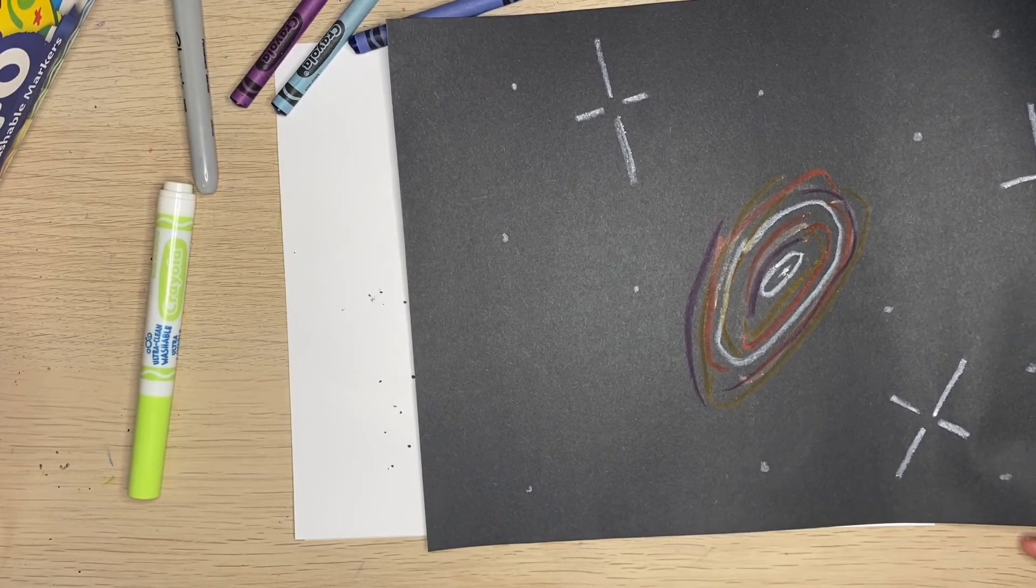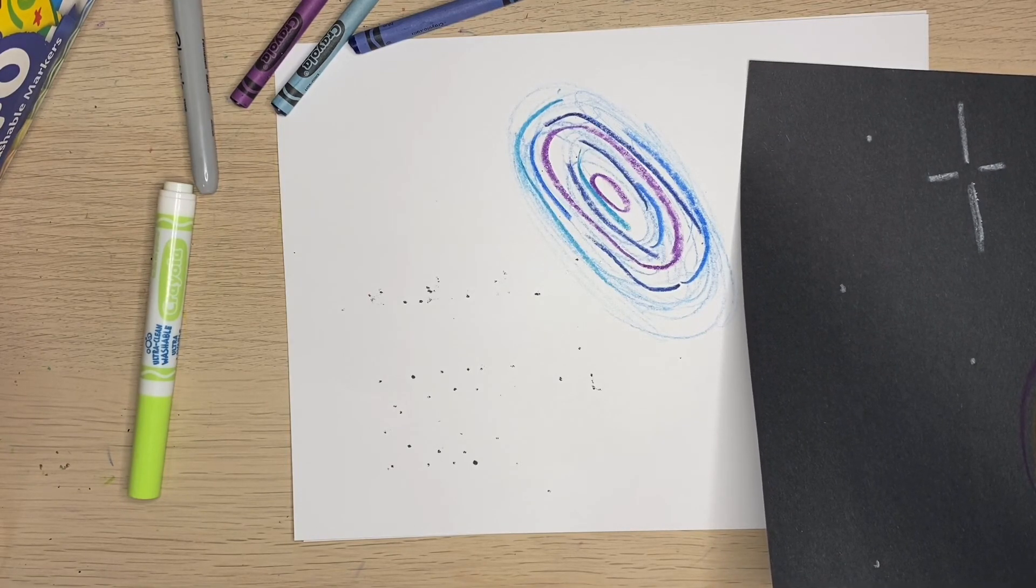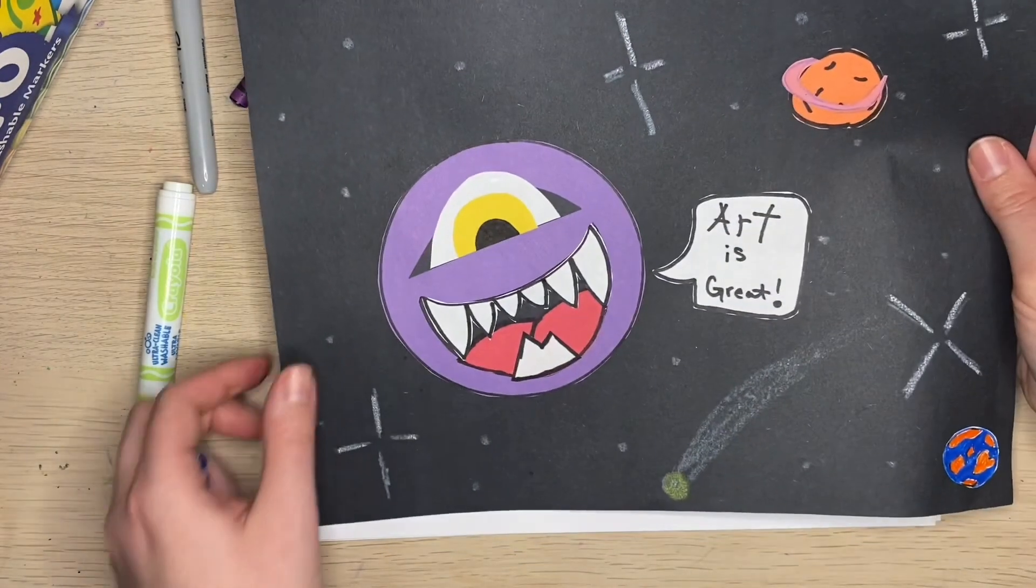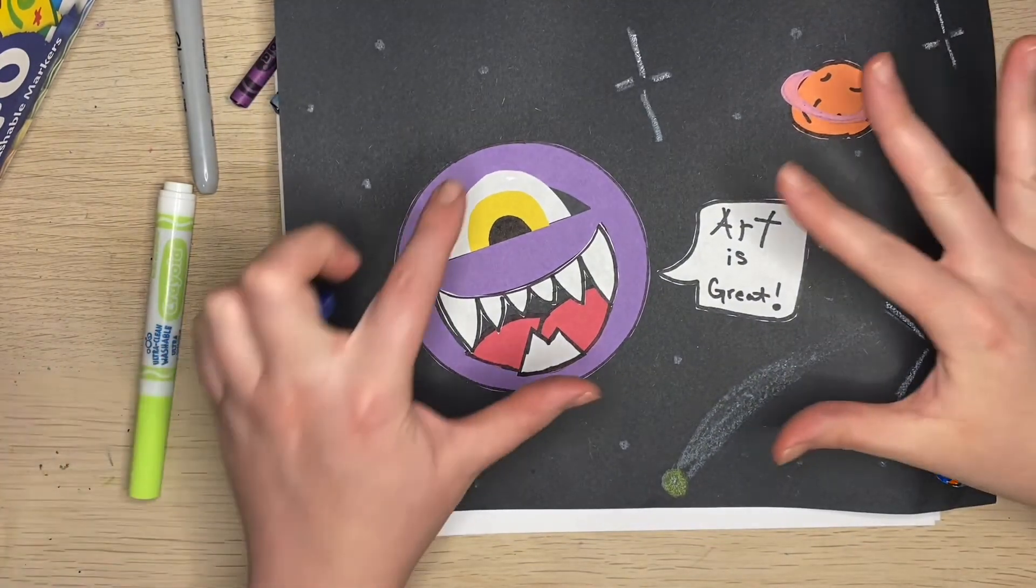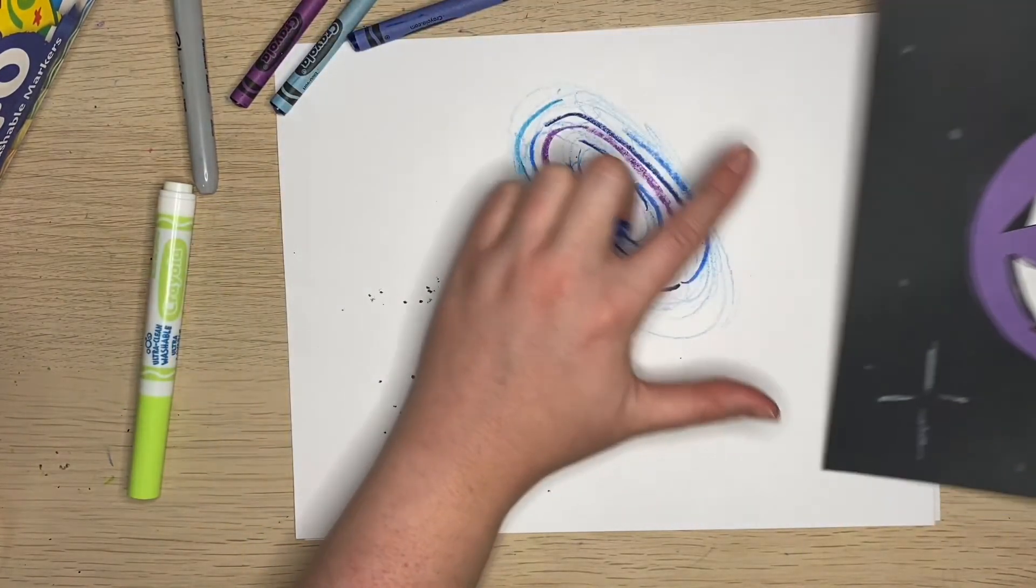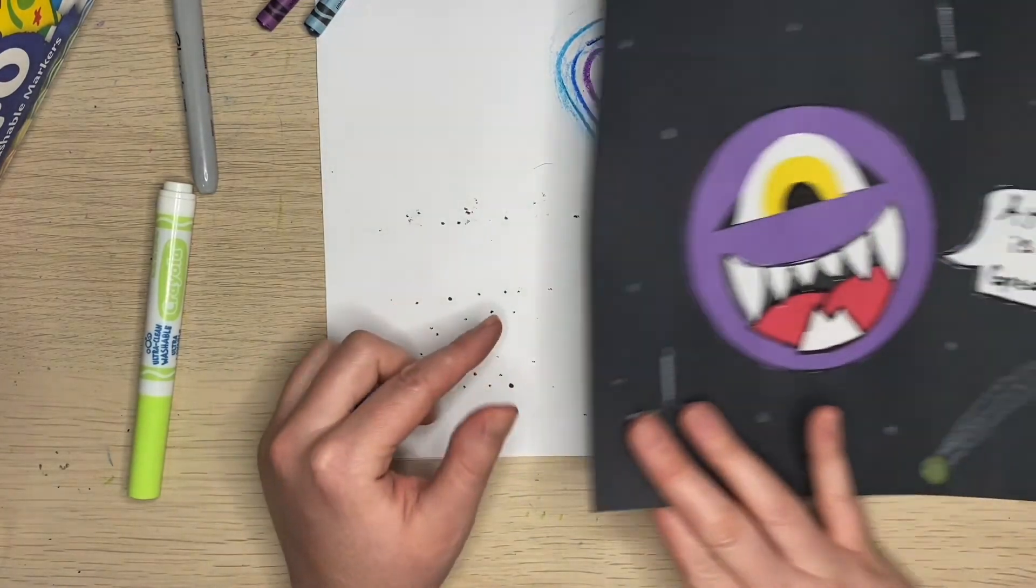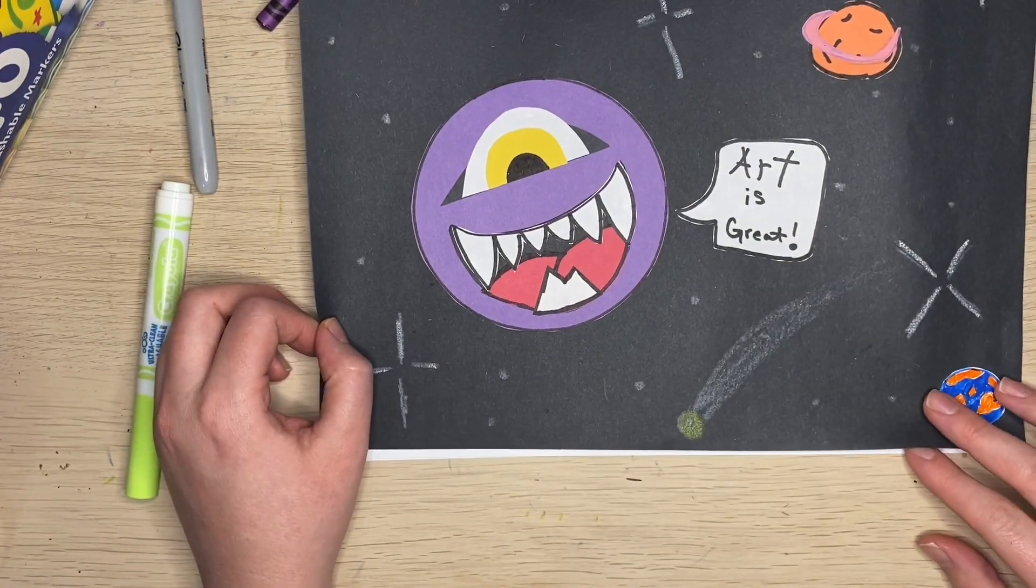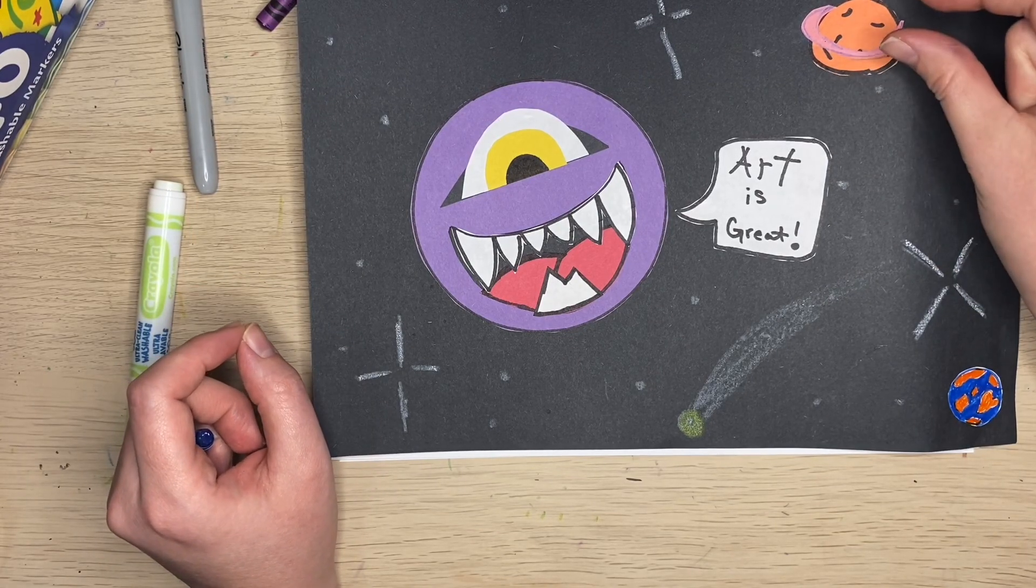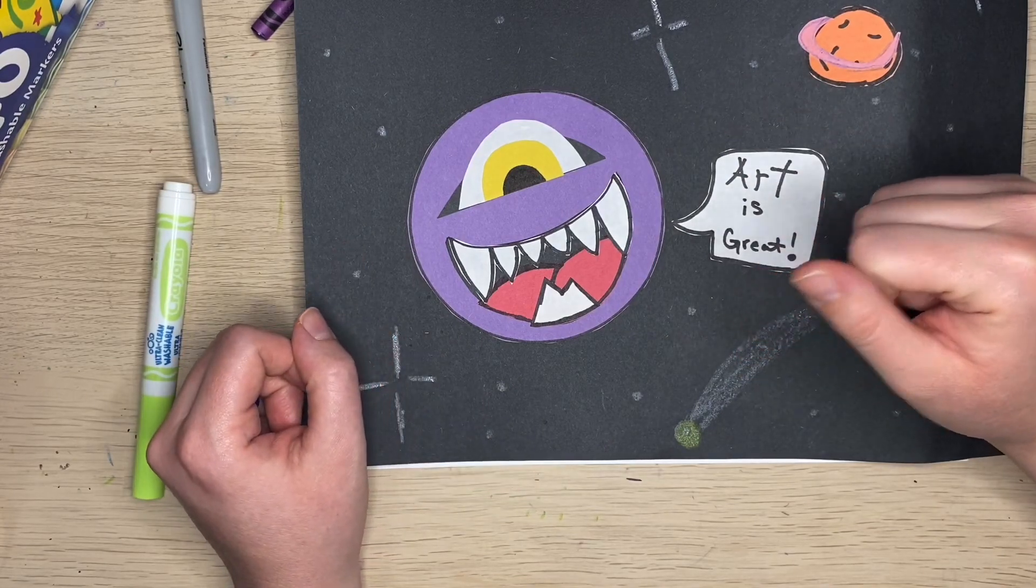Once you're done, you can always do it on white paper and glue it to your black paper. You can make planets in different shapes, it's up to you. Once you're done, you will cut it and glue it to your black paper, or just color it if you did it on one paper. And there you go, making your Larry the Loudmouth spacescape. Remember, when things are farther away, draw them smaller. When things are closer to you, draw them bigger. Have fun!